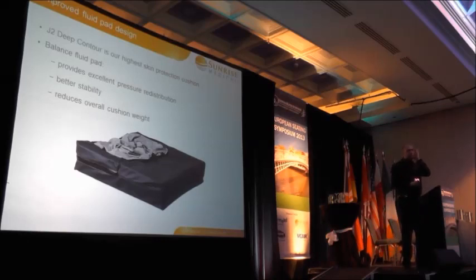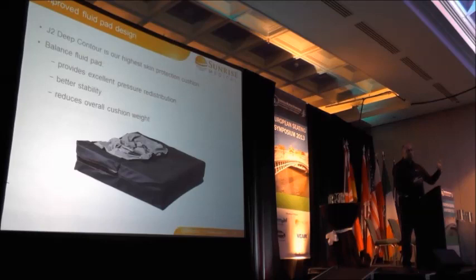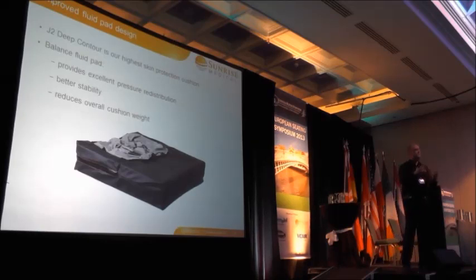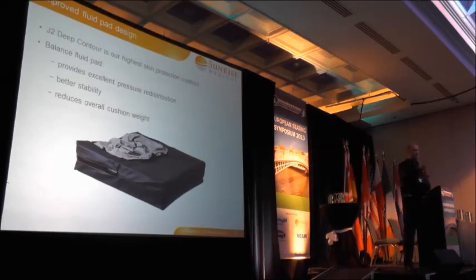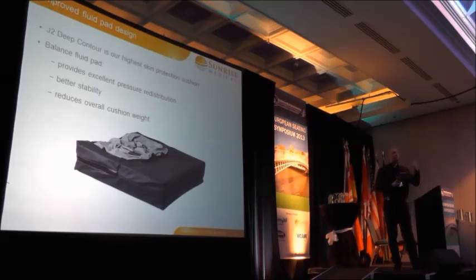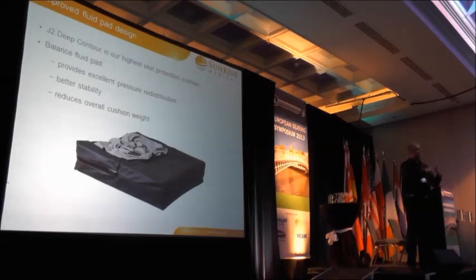When the J engineers designed this cushion, the real aim was to offer pressure relief comparable to what we'd associate with a J2D contour cushion. They used a pressure mapping rig system to achieve those readings. We see this cushion performing very similarly, with a slight difference at the greater trochanters where we're loading a little more for stability. So we get that high skin protection combined with stability — a cushion that offers the very good attributes of the J2D contour but in a much more stable base.